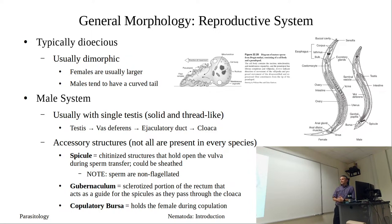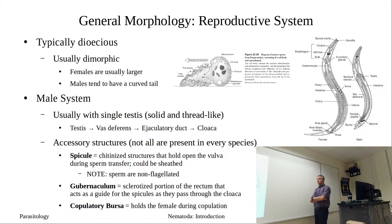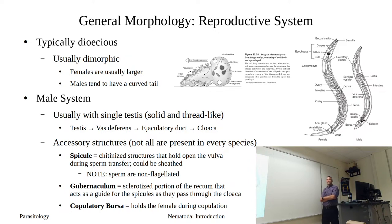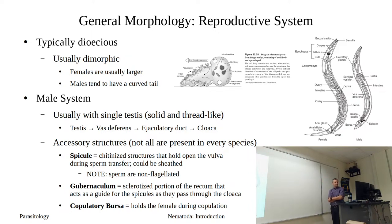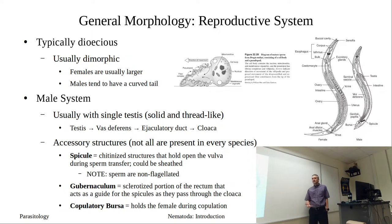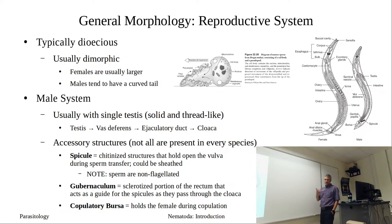The nematode reproductive system is typically dioecious — male and female worms. Sexual reproduction is the norm, and nematodes typically show dimorphism where females are larger than males. Males tend to have a curved tail, which is somewhat reliable for identification, though preserved worms can be contracted in a curved state making it tricky.